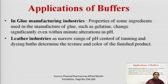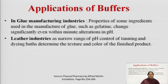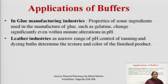In glue manufacturing, properties of ingredients like gelatin change significantly even with minute alterations in pH, so pH must be maintained for proper glue manufacture. In leather industries, a narrow pH control range is maintained for tanning and dyeing baths, which determines the texture and color of the finished product.